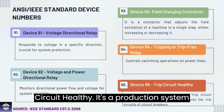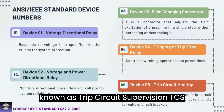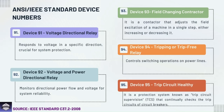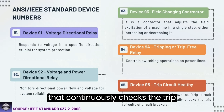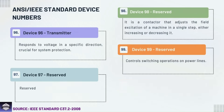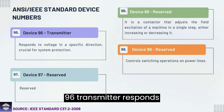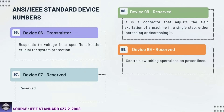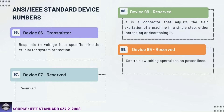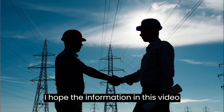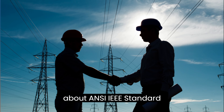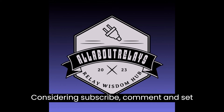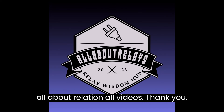Device 95: Trip circuit supervision — a protection system that continuously checks the trip circuits of circuit breakers. Device 96: Transmitter — responds to voltage in a specific direction, crucial for system protection. Devices 97, 98, and 99 are reserved. I hope the information in this video about ANSI IEEE standard device numbers is useful. Please consider subscribing, commenting, and sharing the All About Relays channel videos. Thank you.